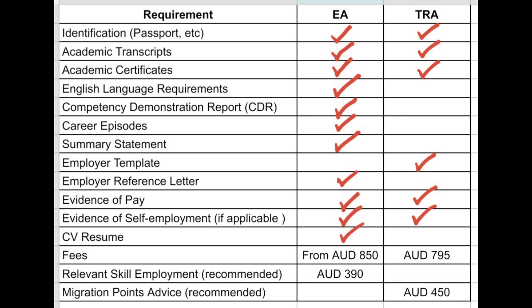Assessment fees are not that cheap. In my case, I chose TRA or Trades Recognition Australia to submit my MSA application. This is because my duties and responsibilities for the past 10 years were more in line with my ANZSCO code, which was 312312 or Electrical Engineering Technician, which can only be assessed through TRA. In the end, the assessment body that you have to apply to will be based on your ANZSCO code. This is why I always highlight that the first step is choosing your ANZSCO code.